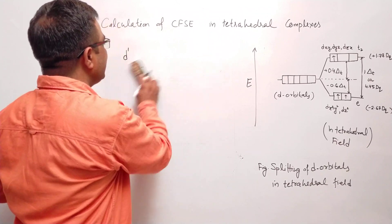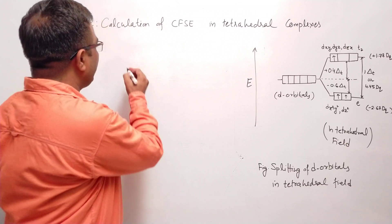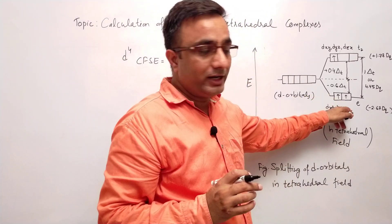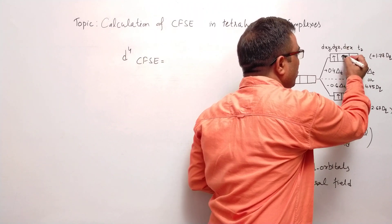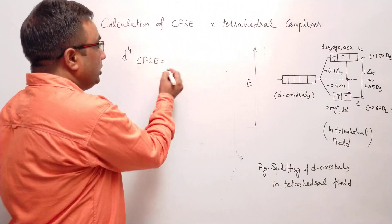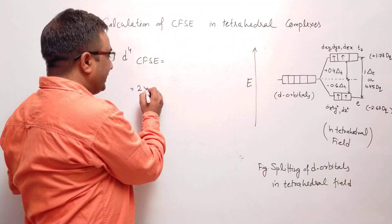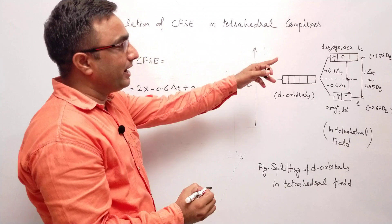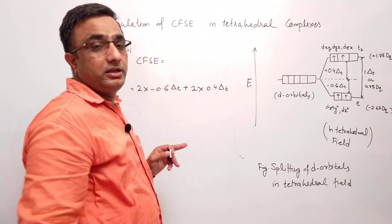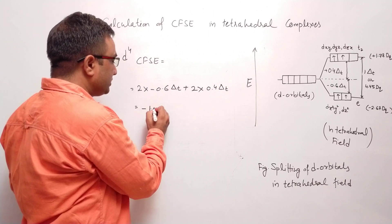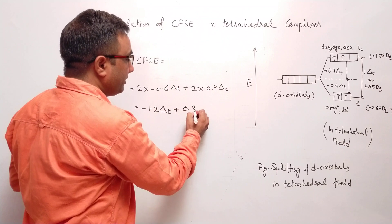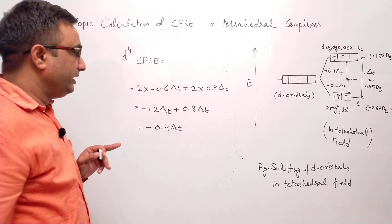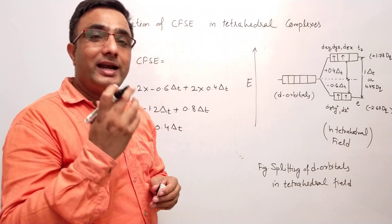We can easily calculate D4. CFSE will be: if four electrons are there — one, two electrons in the lower energy level and three, four electrons going to the higher energy level. Two electrons in the lower energy level: 2 × (−0.6 delta T), and two electrons in the higher energy level: 2 × (+0.4 delta T). That gives −1.2 delta T + 0.8 delta T. Overall CFSE will be minus 0.4 delta T for D4 tetrahedral complex.